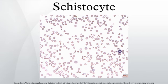Several microangiopathic diseases, including disseminated intravascular coagulation and thrombotic microangiopathies, generate fibrin strands that sever red blood cells as they try to move past a thrombus, creating schistocytes. Schistocytes are often seen in patients with hemolytic anemia. They are frequently a consequence of mechanical artificial heart valves and hemolytic uremic syndrome, thrombotic thrombocytopenic purpura, among other causes.